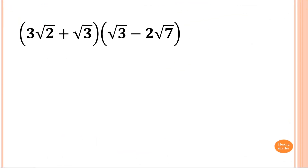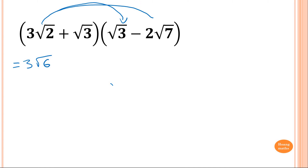So multiplying these two brackets together, that becomes 3 square root of 6. Can't simplify further. Then this times that: 2 times minus 3 times minus 2 is minus 6, and 2 times 7 is 14, giving square root of 14.